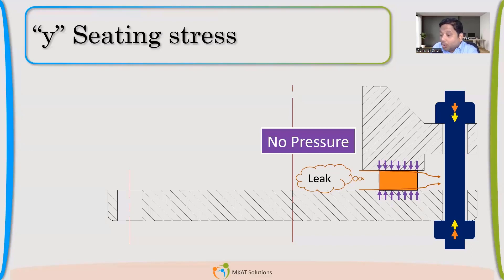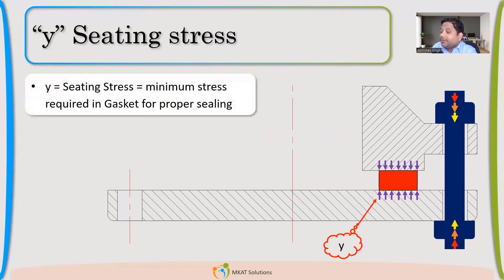Because if you are applying load, the stress in the gasket keep on increasing. Guys, getting it? But still, that leakage has not stopped. So, what I will do? I will apply further load. Now, you can see the gasket turning red. And there is no leakage. Now, that leakage has stopped.